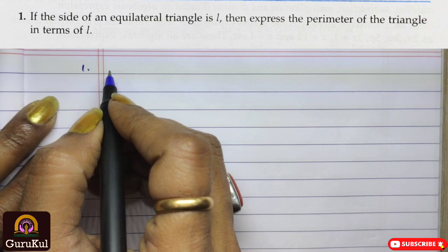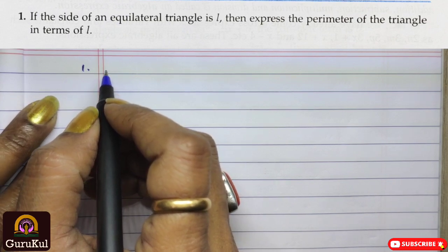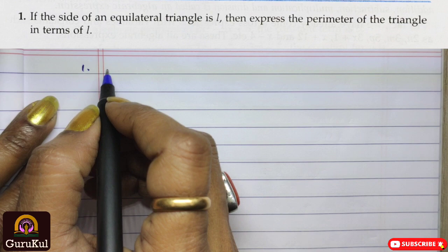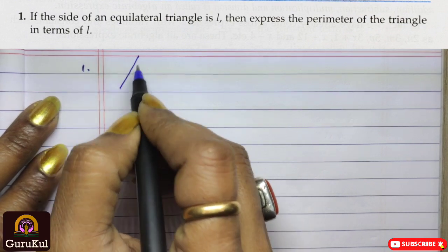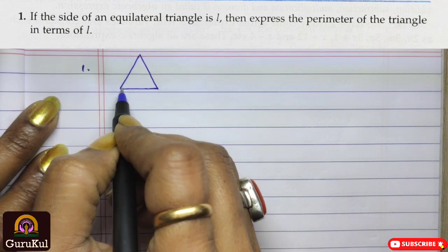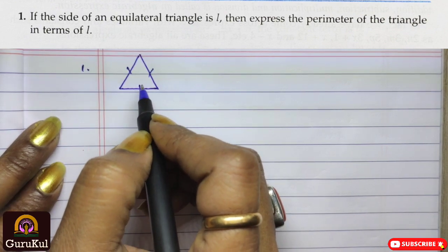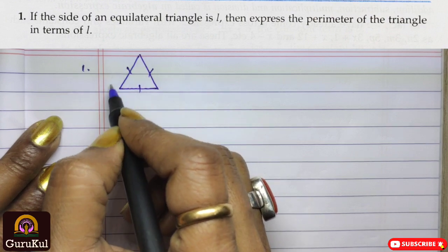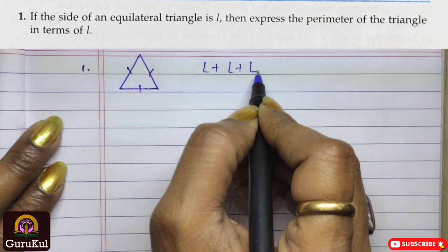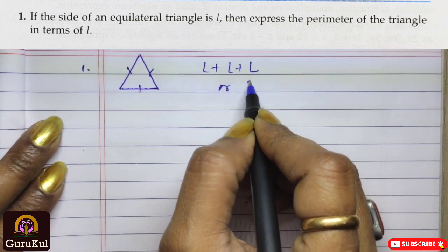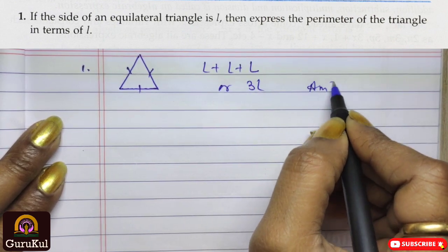Sum number 1 is: if the side of an equilateral triangle is L, then express the perimeter of the triangle in terms of L. This is the figure of a triangle which is equal in all its three sides. Hence, in order to find the perimeter, we have to add its three sides. That is L plus L plus L, or 3L, is the answer.